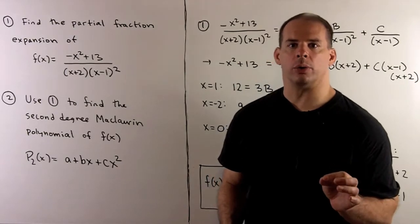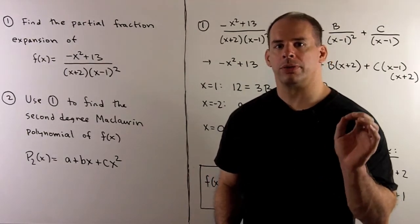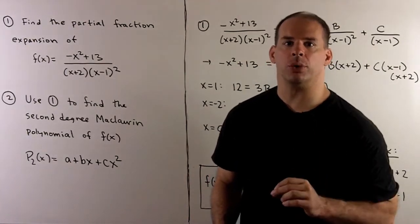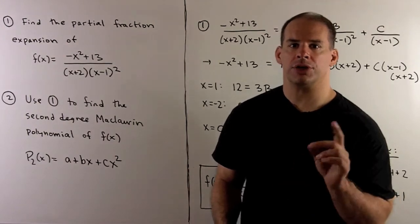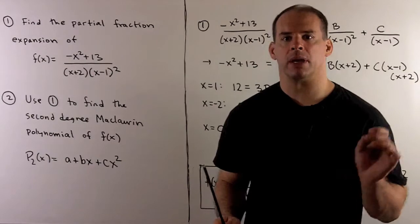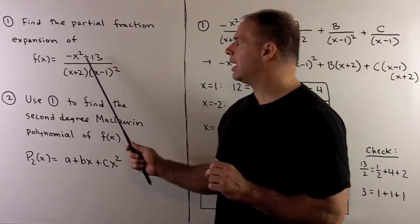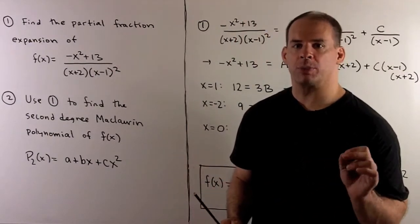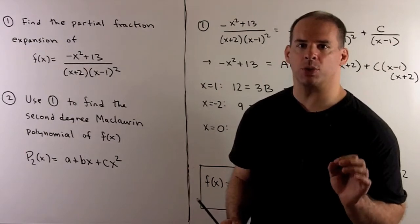Here's a problem on Maclaurin polynomials. We'll note three solutions and work out two of them. First we want to find the partial fraction expansion of f(x) equal to -x² + 13 over (x+2)(x-1)².